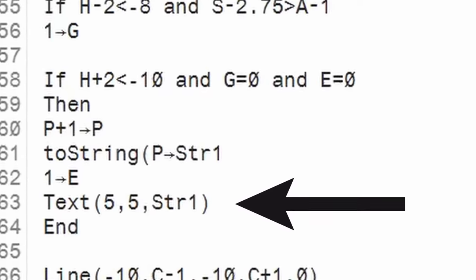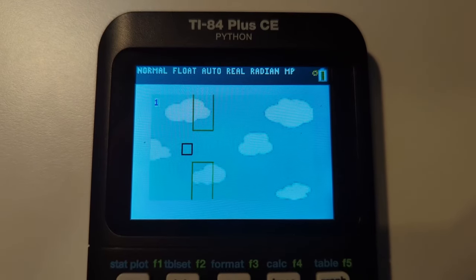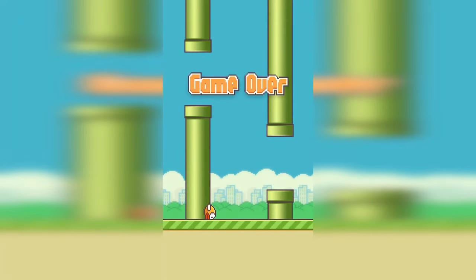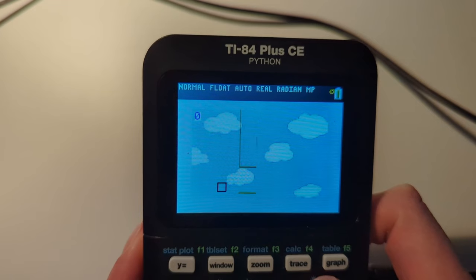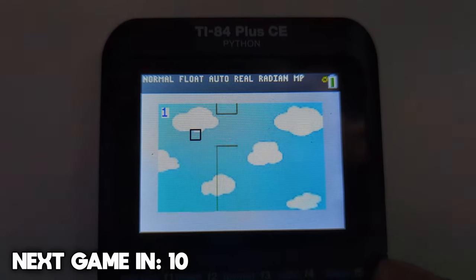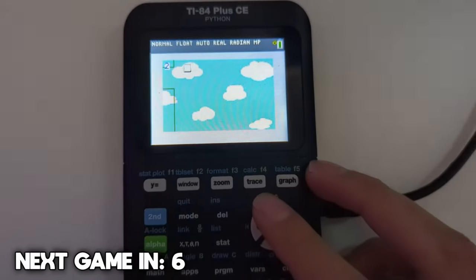Of course, there also needed to be a score, so I used a function that draws text on the graph screen to display a number that increases every time you pass a pipe, and it worked. Finally, all I needed was a death screen, so I made another image and made it so that it gets set as the background when the game ends, and well, this game was complete, even if it does look a little scuffed compared to the actual Flappy Bird.